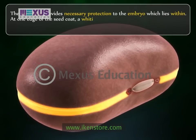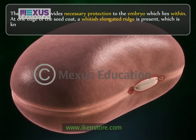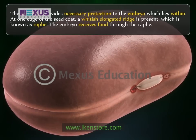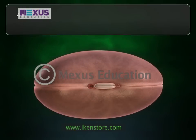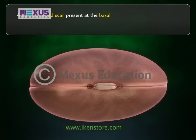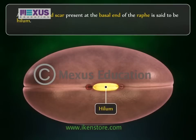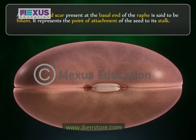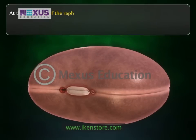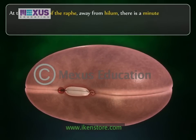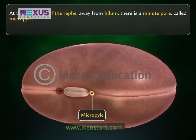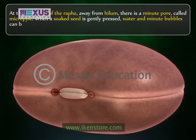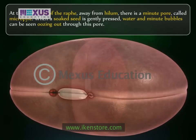At one edge of the seed coat, a whitish elongated ridge is present, known as the raphe. The embryo receives food through the raphe. A distinct broad scar present at the basal end of the raphe is the hilum, which represents the point of attachment of the seed to its stalk. At the other end of the raphe, away from the hilum, there is a minute pore called the micropyle. When a soaked seed is gently pressed, water and minute bubbles can be seen oozing out through this pore.